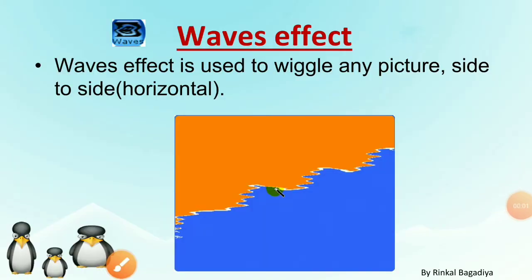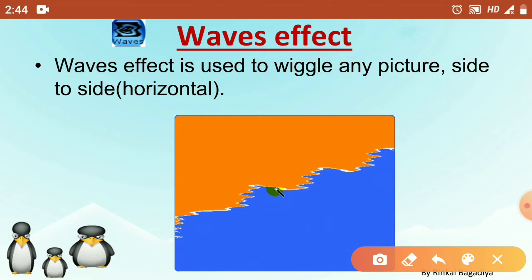Next is waves effect. This tool is used to wiggle any picture side to side — that is, horizontally from left to right and right to left. Wiggle means small rapid movements. We can give small rapid movements to our picture. After applying waves effect, it will look like this. It wiggles the picture horizontally from side to side, creating small movements in our drawing.